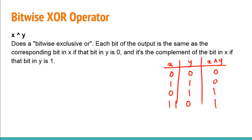This matches the definition: when y is zero, the output equals x; when y is one, the output is the opposite of x. An easy way to remember: if both inputs are the same (both zero or both one) the output is zero; if the inputs are different (0 and 1 or 1 and 0) the output is one.